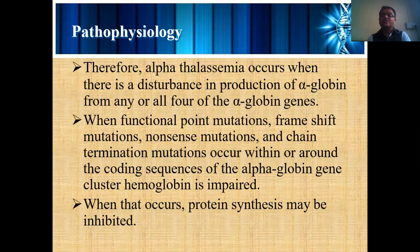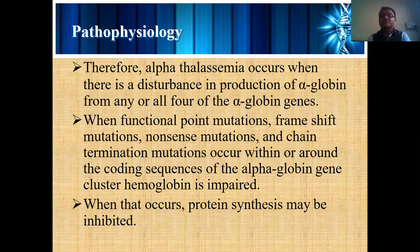Some of the frameshift mutations result in altered genes. Sensations not observed are called nonsense mutations. Gene termination mutations occur in that particular cell or in the surrounding area of that cell — the alpha globulin gene cluster. When this occurs, hemoglobin synthesis is impaired and protein synthesis may be inhibited. If there is a DNA change, the required protein synthesis is also altered and sometimes completely inhibited.